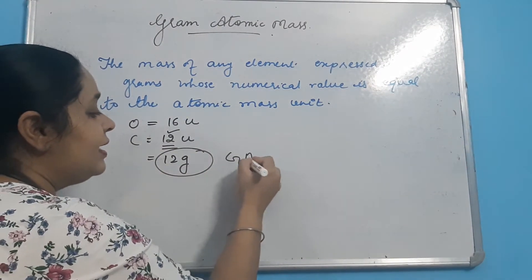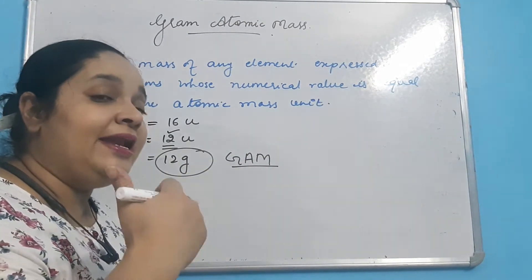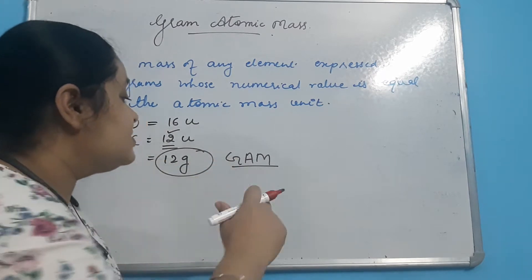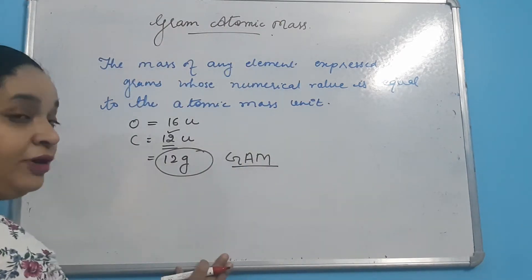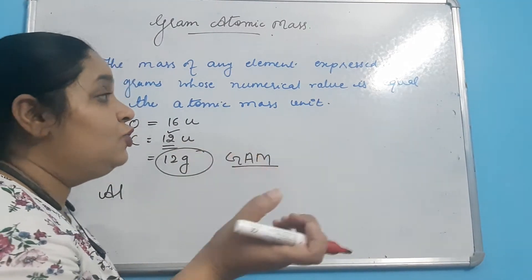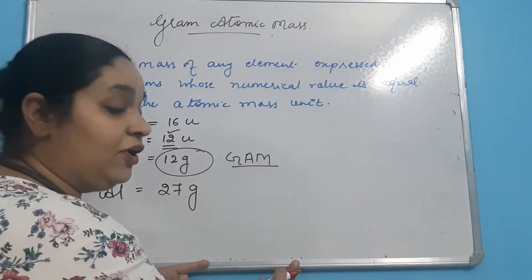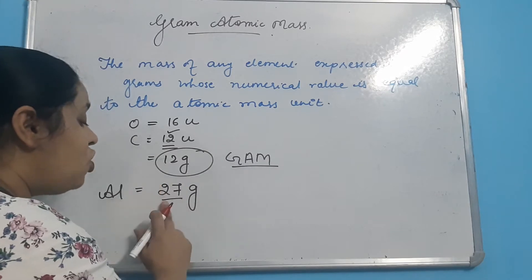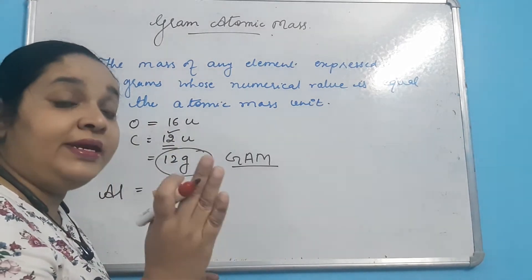Kisibhi element ke atomic mass ko gram mein express karna — wo gram atomic mass kelaayega. For example, suppose aluminium ki ek frame hai board ke paas, aur hamne is aluminium ki frame ko weigh kia — to humne kitna kia: 27 gram. The weight of the aluminium frame is coming 27 grams.